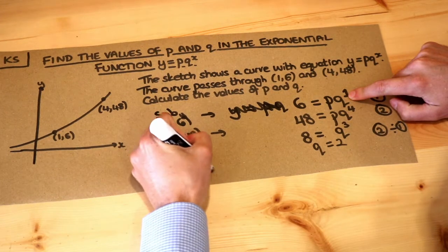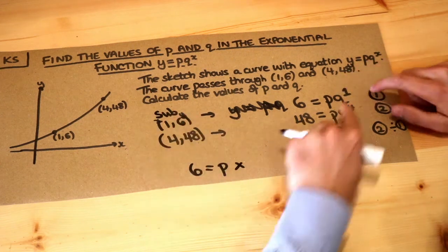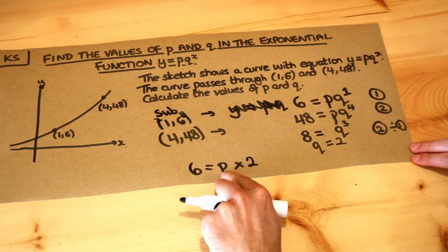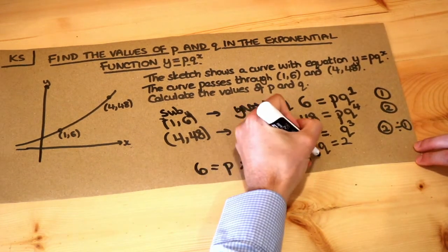We've got 6 equals p, which we don't know, multiplied by q to the 1. So that's 2 to the power of 1, which is just 2. And what times 2 is 6? Well, it's 3. So that gives us that p is 3.